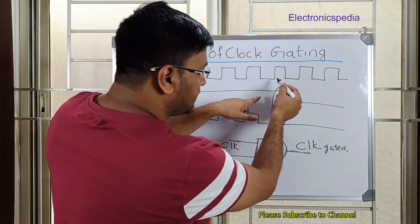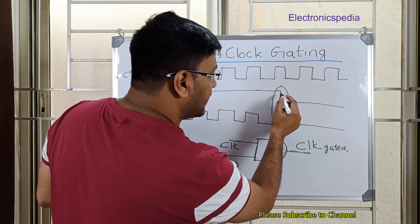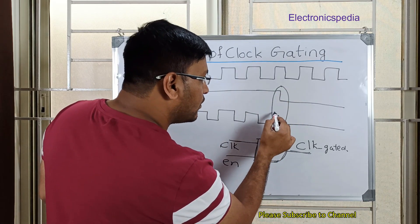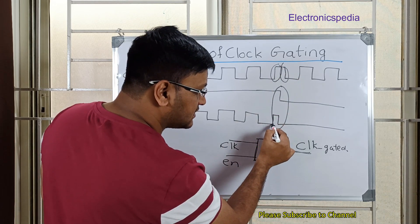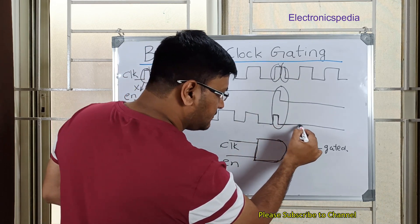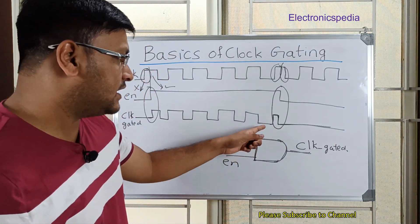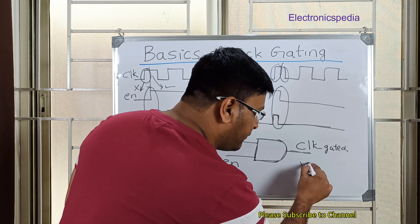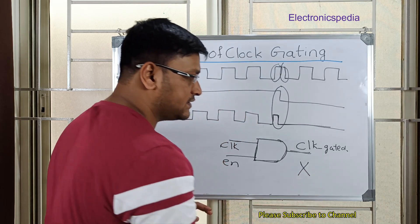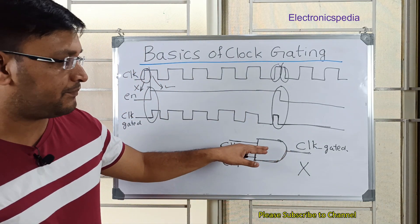Now if you consider this other edge, what's happening here? Only the half portion of this clock is present, but the other half is gone, because you did not sample that because the enable is not there.